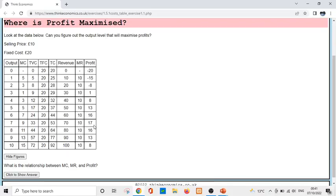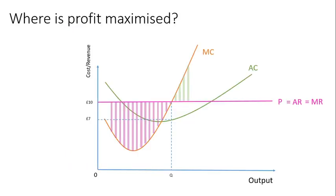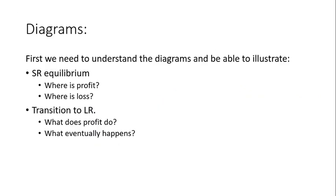Just remember: once marginal cost is higher than marginal revenue, the profit is still positive but it's going down. So profit is maximized where marginal revenue equals marginal cost. The important thing to illustrate in these diagrams is the short-run equilibrium — showing where there is profit, or possibly a loss — and then the transition to the long run. What does profit do, and how does it change the dynamics of this model? That leads us to a new outcome in the long run, very different from the short run.